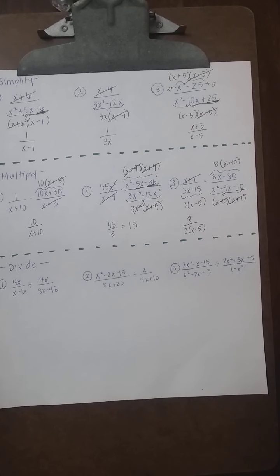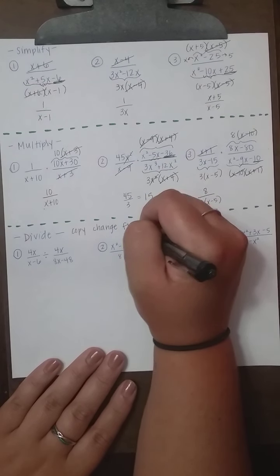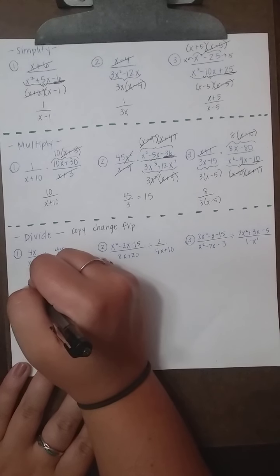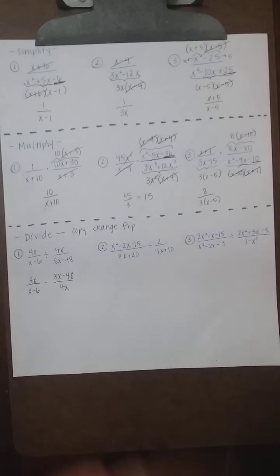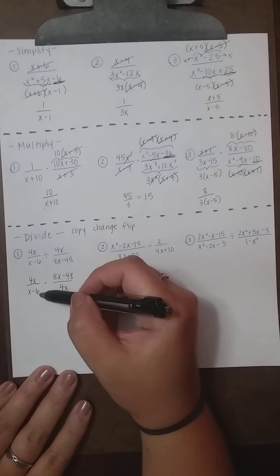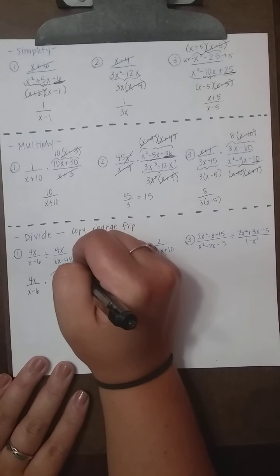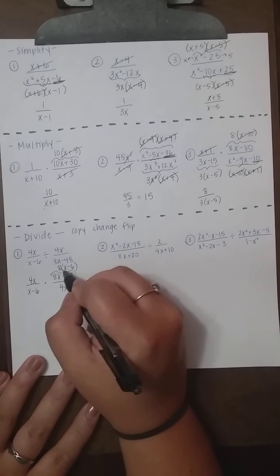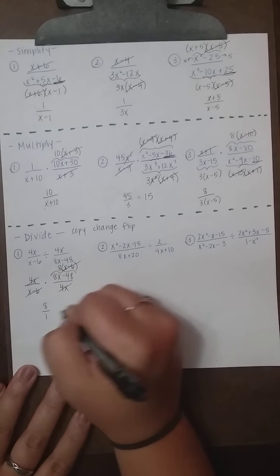For dividing rational expressions, before factoring, always copy-change-flip. Example 1: (4x) over (8x − 48) ÷ (x − 6) over 1. Copy the first fraction, change to multiplication, flip the second. Factor 8x − 48 with GCF of 8: 8(x − 6). Cancel (x − 6) and 4x top and bottom, leaving 8 over 1, which is just 8.